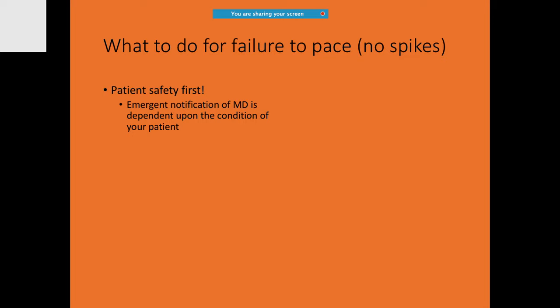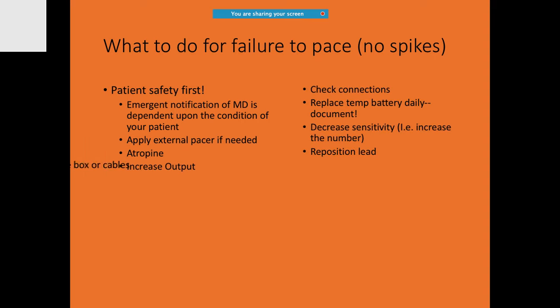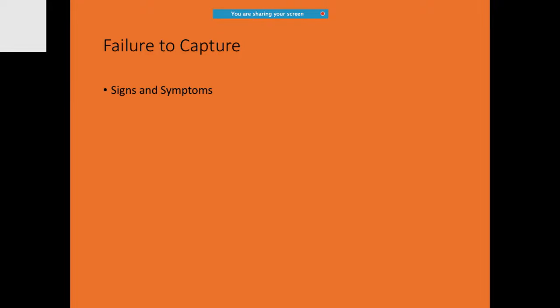If there are no pacing spikes, check patient safety first — call a physician. Apply external pacing if needed. Check and tighten connections, replace a temporary battery, and possibly change the box or cables. For failure to capture, the pacing spike is not followed by depolarization. Lead dislodgement or fracture can also cause failure to capture.